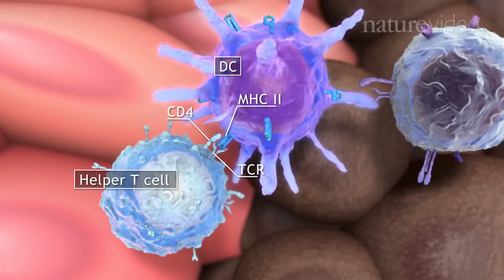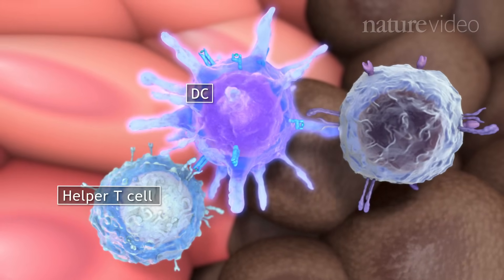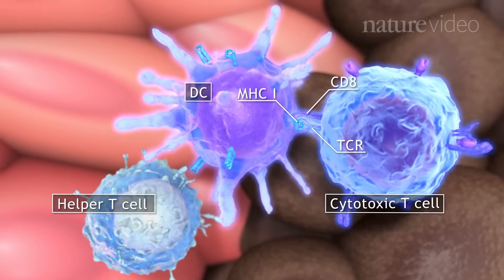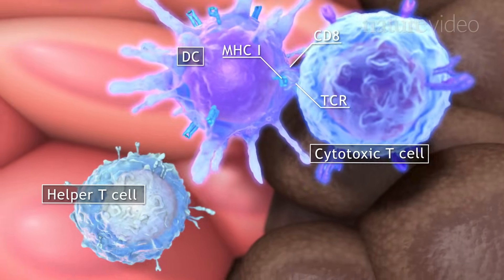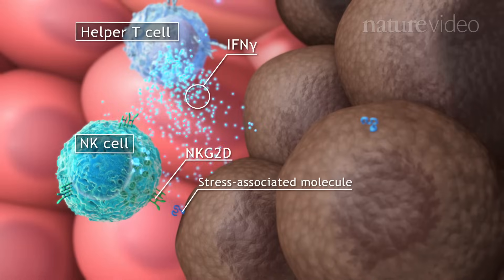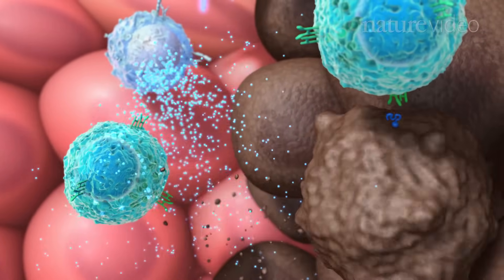Helper T cells support these responses. They help DCs to activate cytotoxic T cells, and they produce cytokines, such as interferon gamma, that recruit and activate more NK cells.